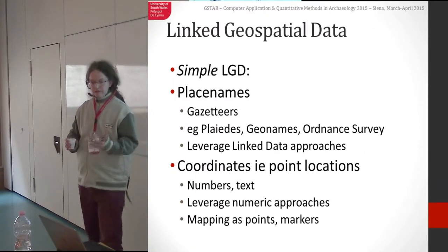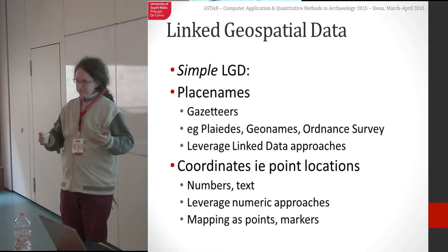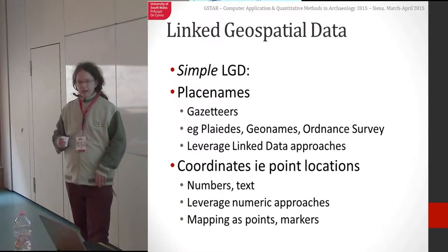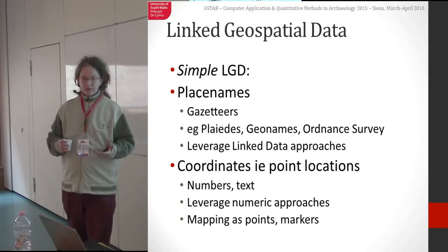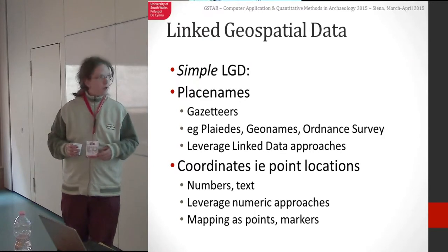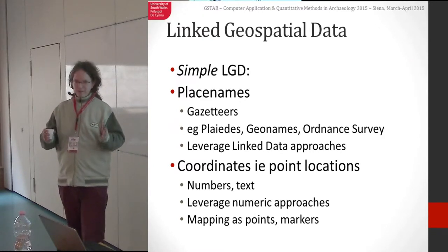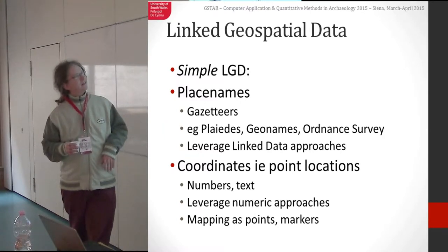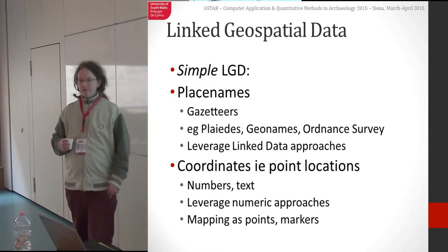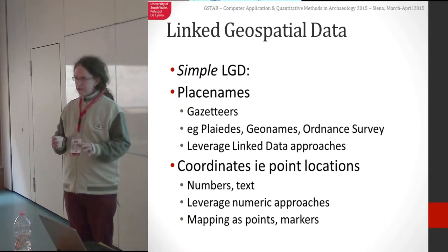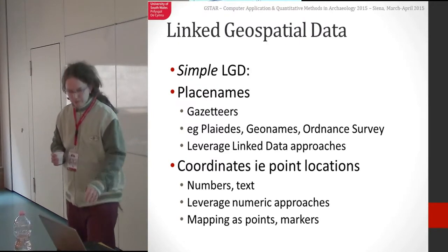So I want to talk about simple linked geospatial data — again, I'm talking about the geometries here, not to imply that it's easy. We can talk about gazetteers, we can talk about coordinates, and we can leverage fairly traditional linked data approaches with this. We don't need to do anything too special. We can visualise things, query things, link them, show them on maps.